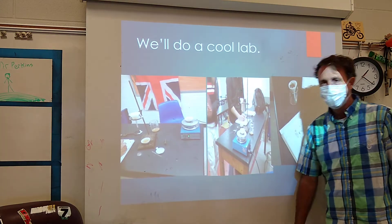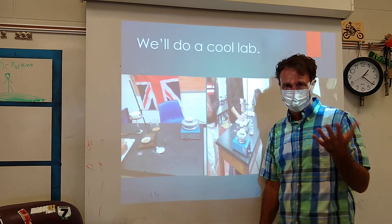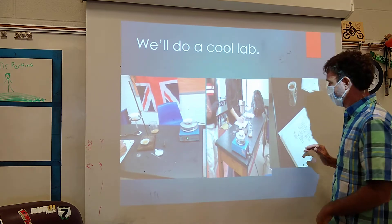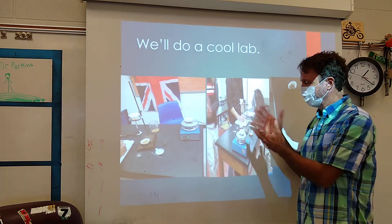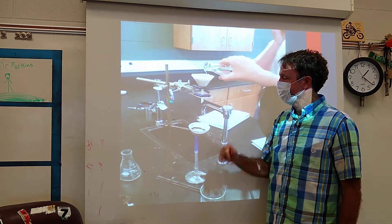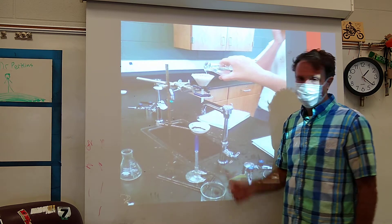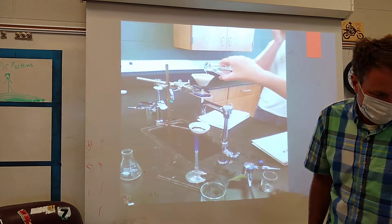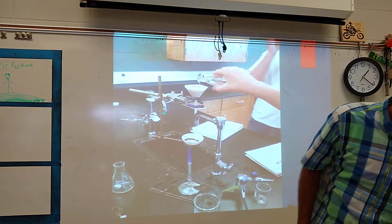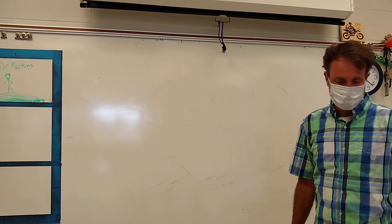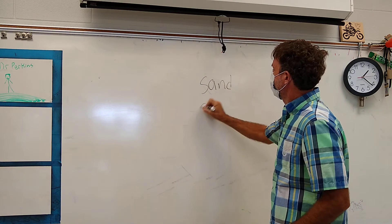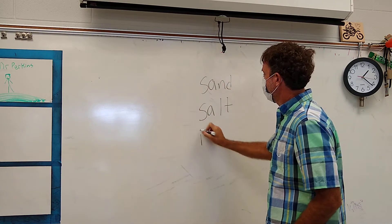We're going to do a cool lab. There's another video with the lab questions on it — this is the intro to that lab. It's a separating mixture lab, and you can see in these pictures we're going to build a little contraption. What we've got here is sand, salt, and iron, and we're going to use the physical properties of each in our lab.